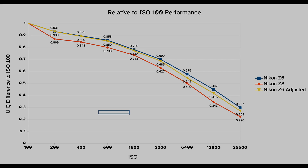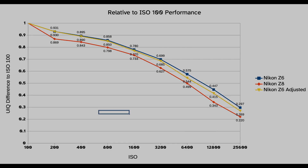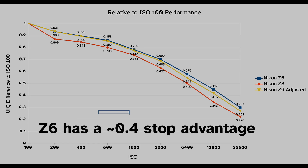Looking at the UIQ algorithm for the adjusted Z6 images, the sharpness-adjusted Z6 still pulls ahead of the Z8, but by a lot less. The calculated advantage at ISO 25,600 is now about 40% of a stop. We can also do a similar calculation by compensating for the additional detail in the Z8 file, giving the Z8 a tiny amount of denoising so that the detail in the Z8 is smudged a little to match the detail in the Z6 file. This was a bit tricky, so I erred on the side of caution and gave the Z8 just a tiny bit of denoising.